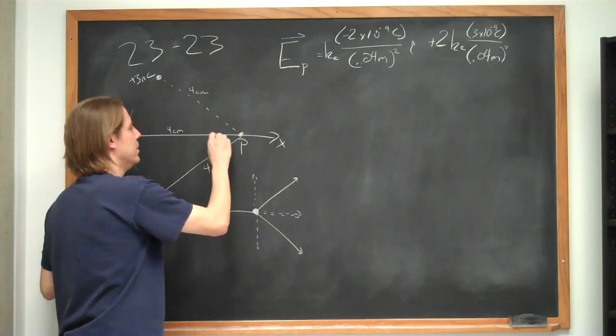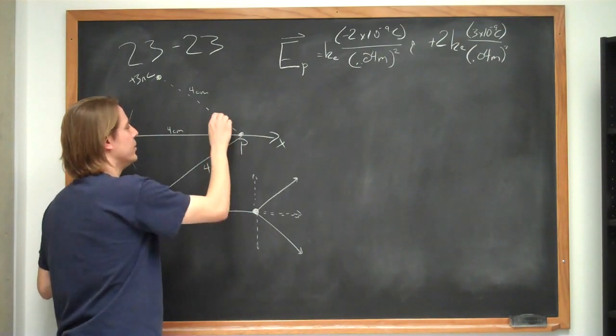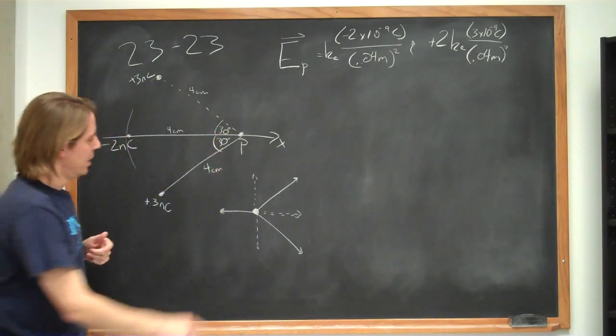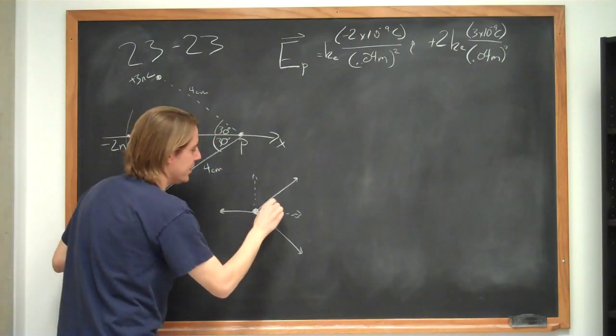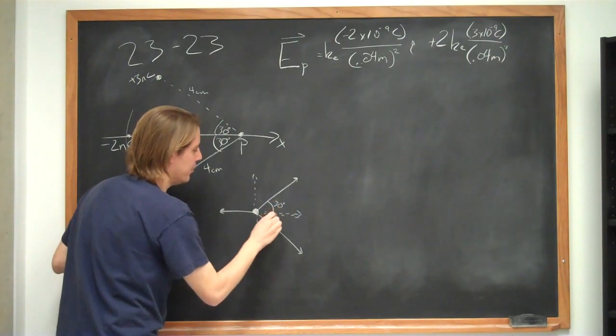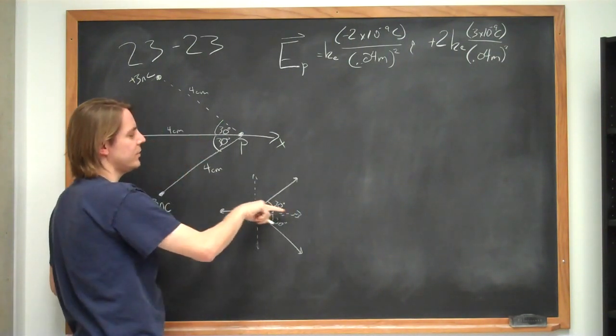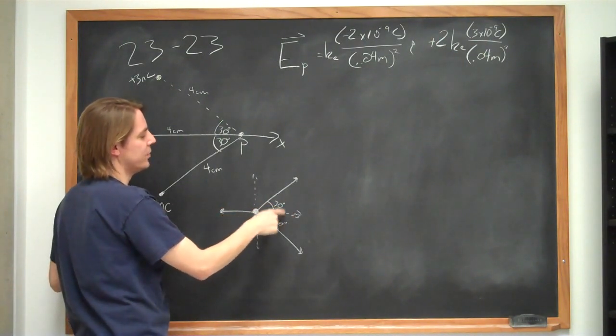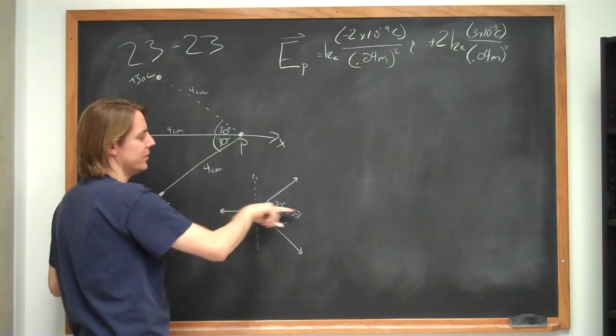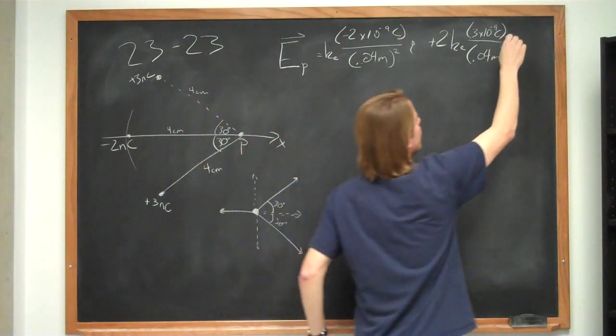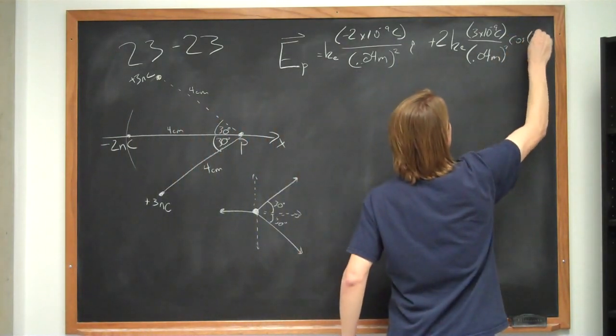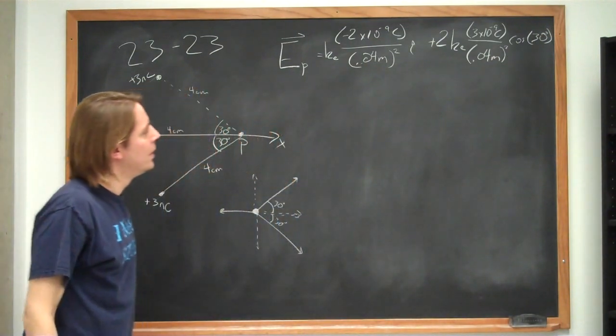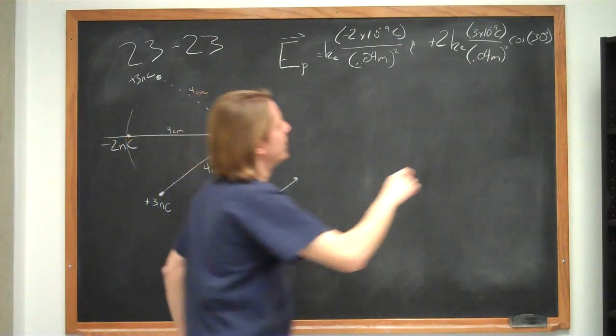We know that this angle is 30 degrees. They tell us that both these angles are 30 degrees. So if that angle is 30 degrees, then this angle is 30 degrees. And that one is also 30 degrees. So in each case, the horizontal component, we just have to multiply by the cosine of 30 degrees. And that is also in the i-hat direction.